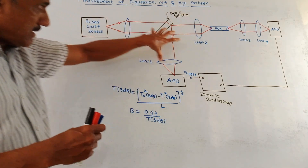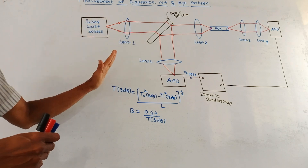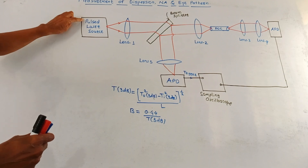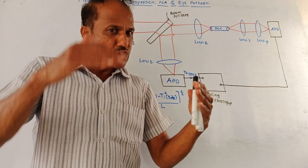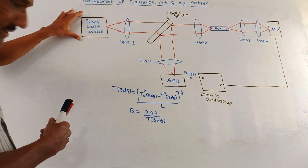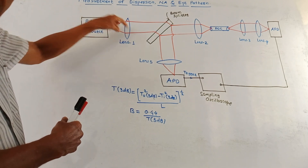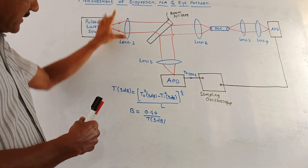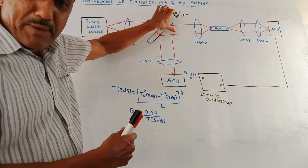This is the block schematic which is used to measure the intermodal dispersion in an optical cable. We are making use of a pulsed laser source — a laser which generates different pulses of light. This is the pulsed laser source whose output is as shown by these red arrows. This is lens 1, and the output of lens 1 is applied to the beam splitter.